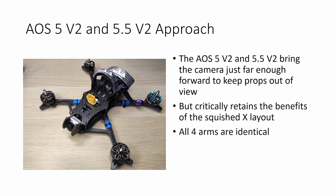The approach I've taken with the AOS 5 v2 and 5.5 v2 is to bring the camera just far enough forward of the front standoffs to keep the props out of view but critically we're retaining the benefits of the squished x layout so we have that good vibration and resonance performance we have those symmetric mode shapes which are much kinder to the gyro and much kinder to your GoPro in terms of jello than the mode shapes you get with a dead cat geometry and also we have all four arms remaining identical so you don't need to carry different spares for front and rear arms.